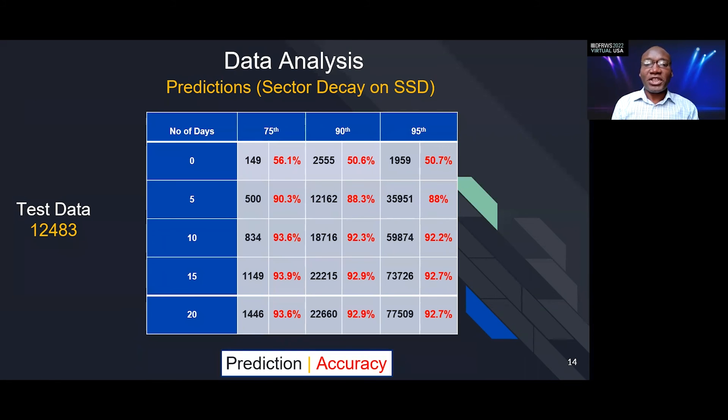We also did a prediction. The model that I showed before, we used 12 computers to collect the data and build the model. To test the accuracy of our model, we took a different computer altogether, but we collected 12,000 files from that computer. We use our model to make predictions. Our model tells us that for 75% of the files on day zero, they should lose an average of 149 sectors. When we use our model to compare that with what we got looking at this new set of data, we were 56% correct. On day five, our model says that each file should have lost about 500 sectors, and we were 90.3% correct. As we go down from the zero to the 20, the accuracy of prediction gets better and better. We also looked at 90% of the files as well as 95% of the files, and we found similar results.